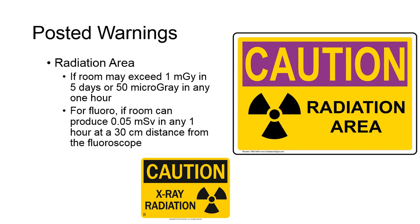Posted Warnings: All radiation warning signs should have the familiar cloverleaf radiation pattern printed against a yellow background. The cloverleaf itself can be red, maroon, or black. A radiation area should have a warning sign displayed if a particular room may ever exceed 1 milligray in 5 days or 50 microgray in any 1 hour. Regarding the use of fluoroscopy, these signs should be observed if the room can produce 0.05 millisieverts in any 1 hour at 30 cm distance from the fluoroscope. A standard sign reading 'Caution Radiation Area' must be posted near all entryways to the room.